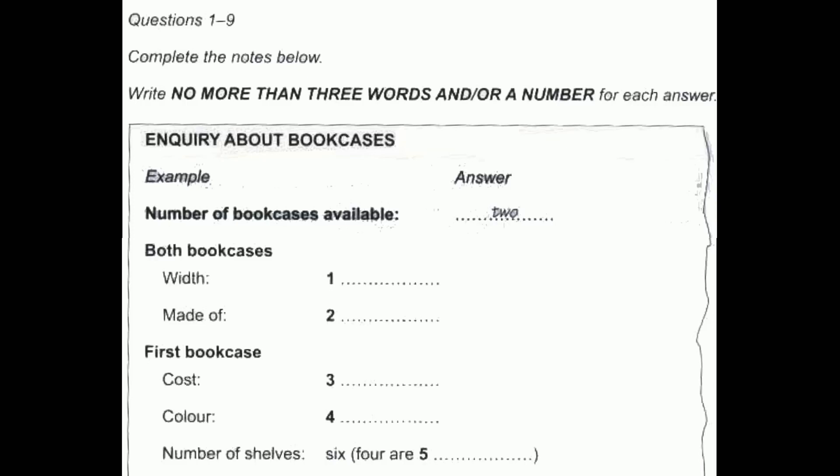Let's see. What else? How many shelves has it got? Six. Two of them are fixed, and the other four are adjustable, so you can shift them up and down according to the sizes of your books. Six. Right. Fine. Well, that certainly sounds like a possibility.